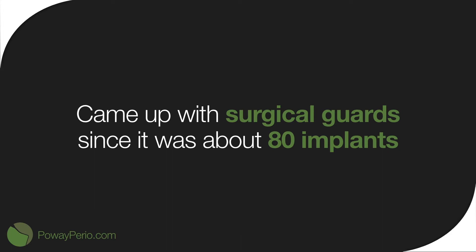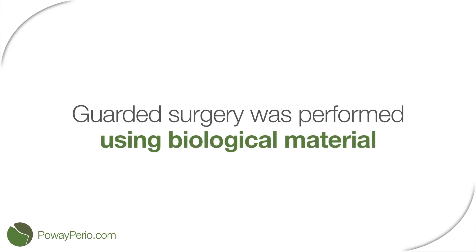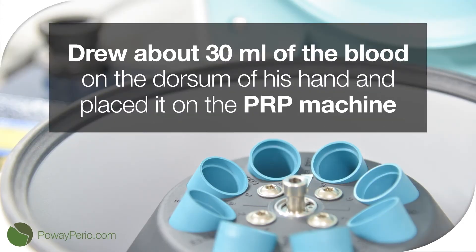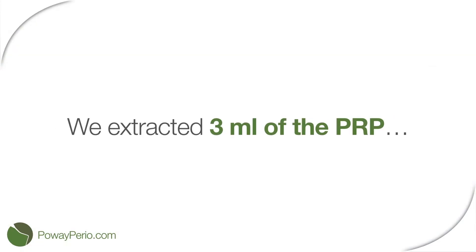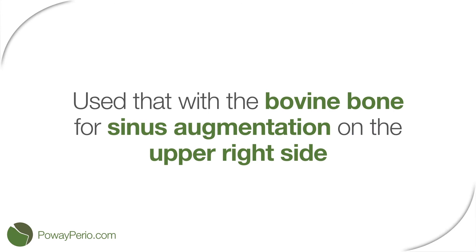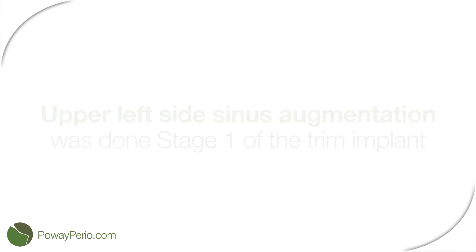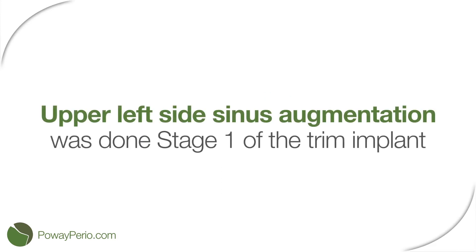about 8 implants needed to be placed. We cannot do it without a surgical guide, so a guided surgery was performed in this case along with using biological material. We drew about 30 ml of blood from the dorsum of his hand and placed it in the PRP machine. We extracted 3 ml of PRP and used that along with bovine bone for sinus augmentation on the upper right side. Upper left side sinus augmentation was done on stage 1 of the treatment plan.